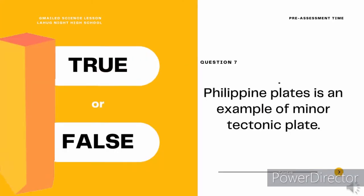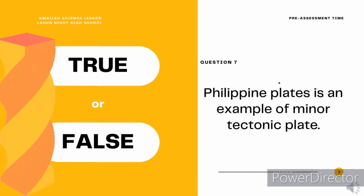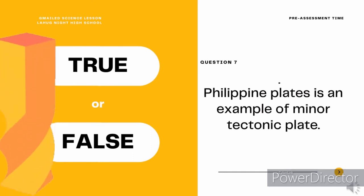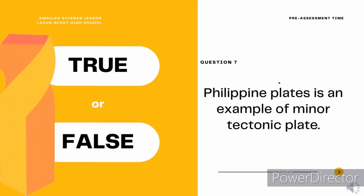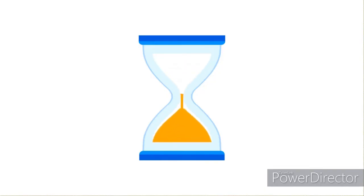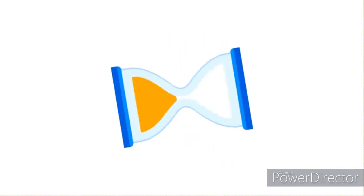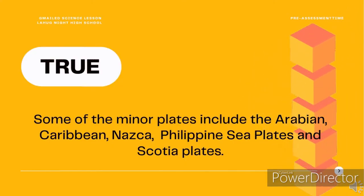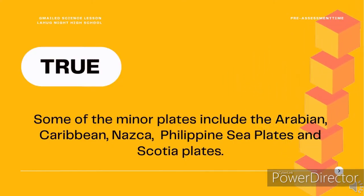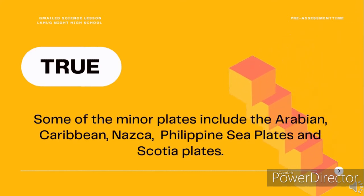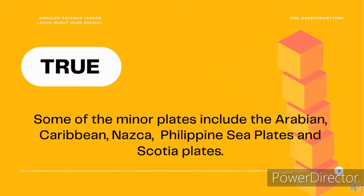True or false? Question 7. The Philippine plate is an example of a minor tectonic plate. True or false? That is true! Some of the minor plates include the Arabian, Caribbean, Nazca, Philippine Sea, and Scotia plates.